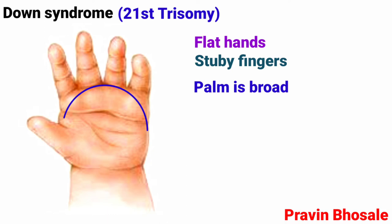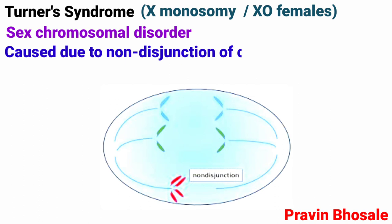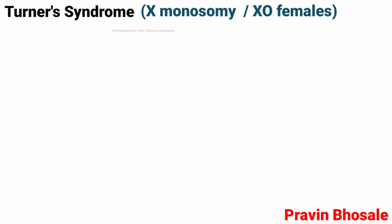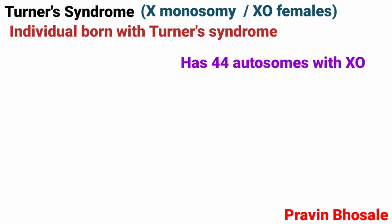Turner syndrome is an X-monosomy affecting females. It is a sex chromosomal disorder caused due to non-disjunction of chromosomes during gamete formation. Individuals born with Turner syndrome have 44 autosomes with a single X chromosome (X0) and are phenotypically female.